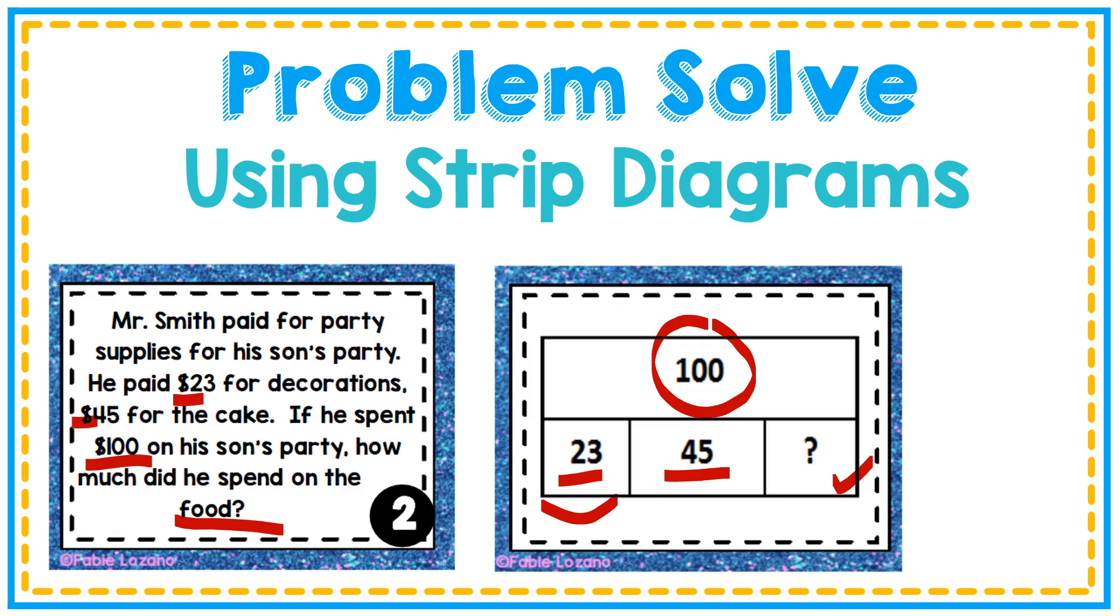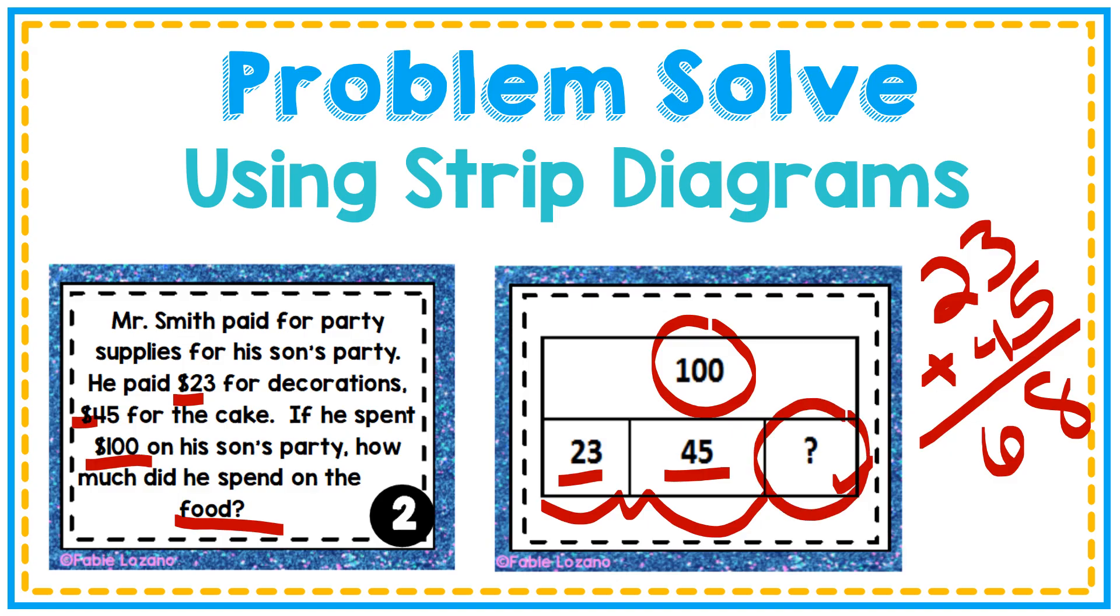In this case, I'm going to take the parts that I have, which is $23 and $45, and I'm going to add them. When I add these up, I get $68. $68 is not my answer. It's going to help me find this missing part. So I'm going to take $100 minus $68. And when I subtract those, I get $32. He spent $32 on the food at his son's party.